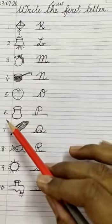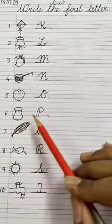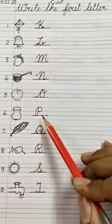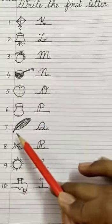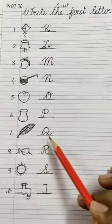Number six, you will draw a pot and write letter P. Number seven, you will draw a quill like this and write letter Q.